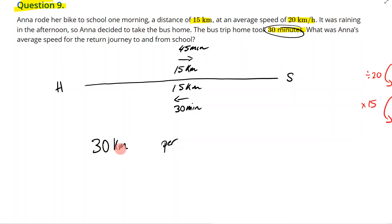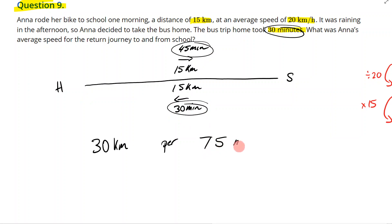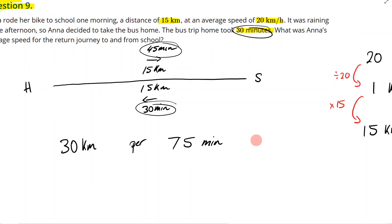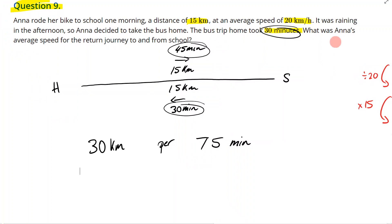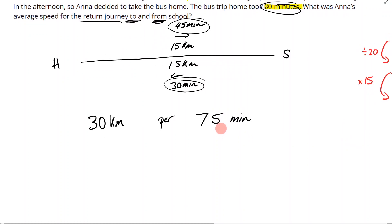So now I know it took her 45 minutes on her bike. She traveled a total distance of 30 kilometers to and from school. The total time is 45 minutes plus 30 minutes, which is 75 minutes. This is Anna's average speed for the return journey to and from school — we're taking into account the total distance and the total time, both to and from school.